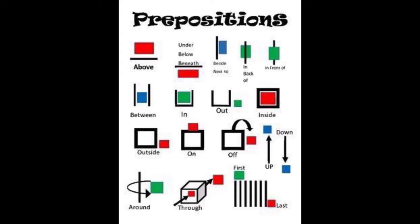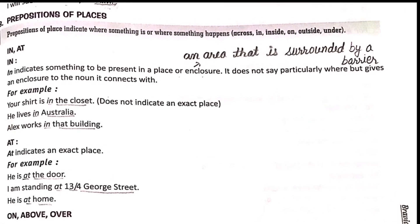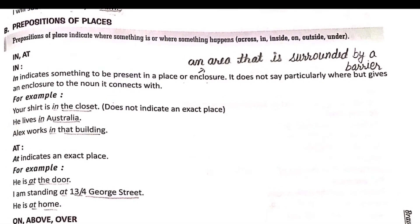We are continuing our chapter on prepositions. Preposition of time we have already covered in the previous lecture. Today we are going to do preposition of places. Preposition of places indicates where something is or where something happens.